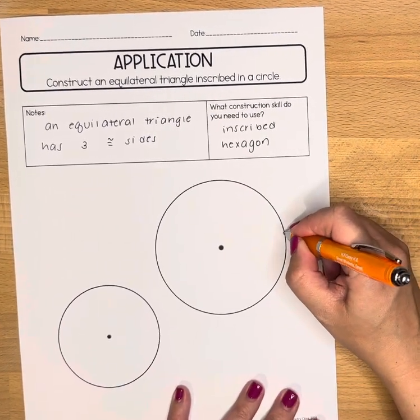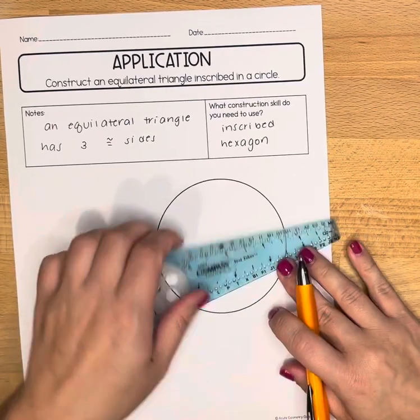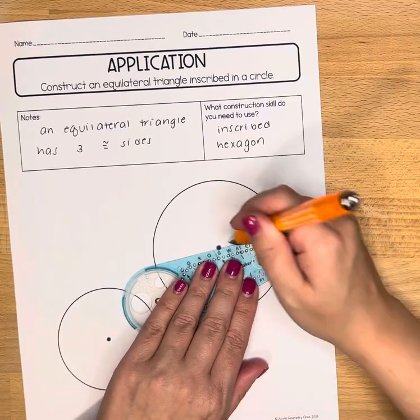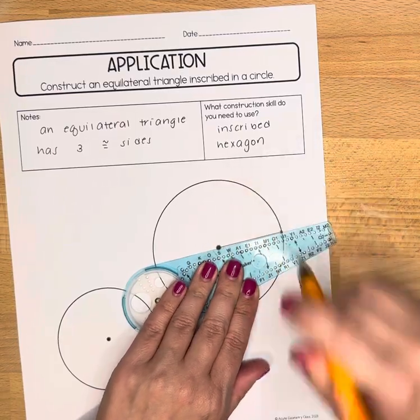That means we're going to first start off by drawing a radius. So place a point on your circle, use a straight edge, draw a radius.